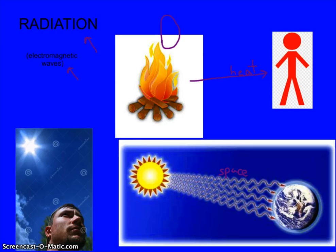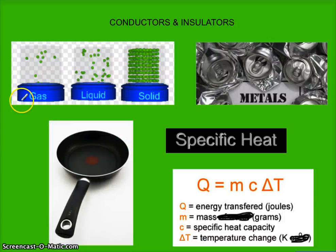Now that we've talked about the three different kinds of energy transfers — conduction, convection, and radiation — let's talk about something different: conductors and insulators. A conductor transfers heat easily. We're talking about objects here — they transfer heat easily, like the coat hanger and the marshmallows on a stick.